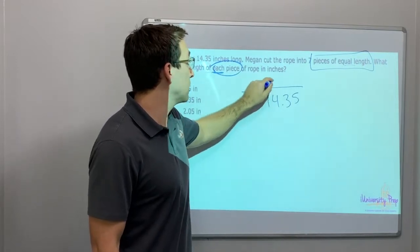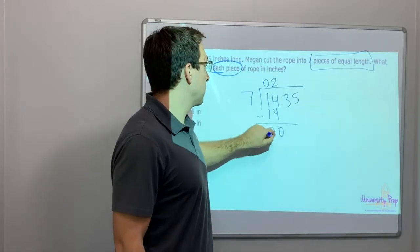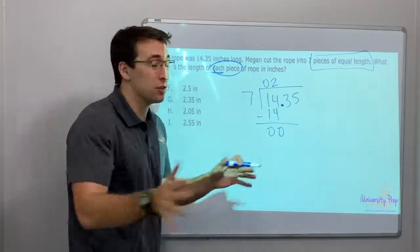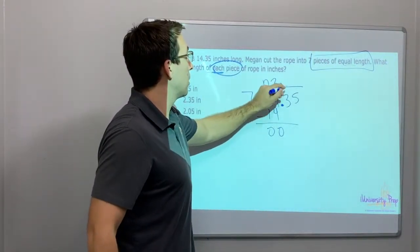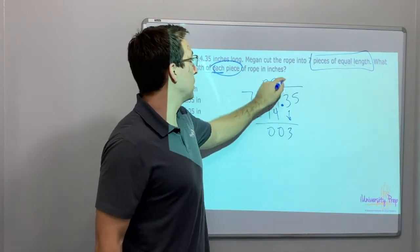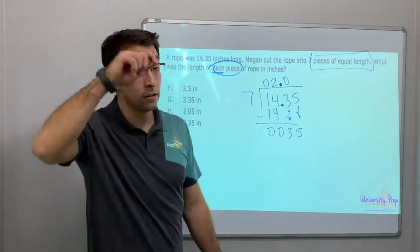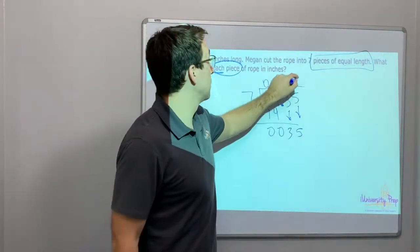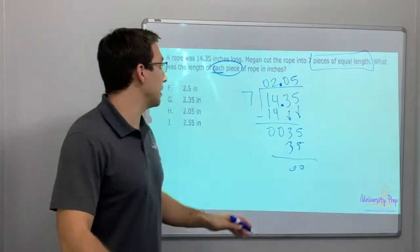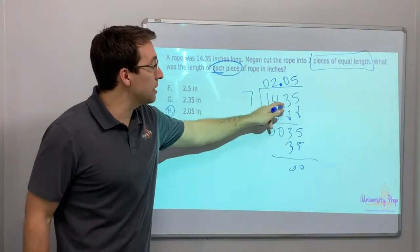7 goes into 14 two times, right? 14 minus 14 is 0. Raise the decimal - I forgot, before you even start just raise the decimal. Bring down my 3. 7 goes into 3 zero times, bring down the 5. 7 goes into 35 five times. 7 times 5 is 35, and our answer zero remainder: 2.05.